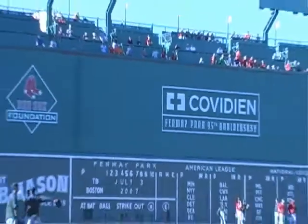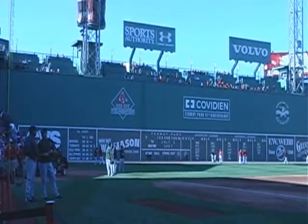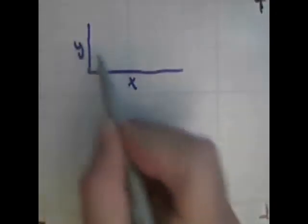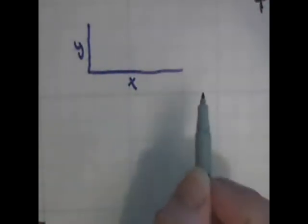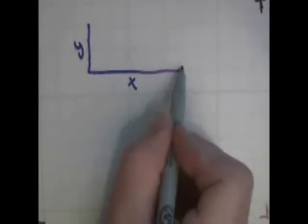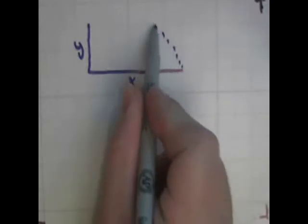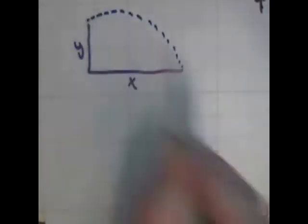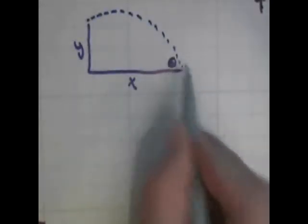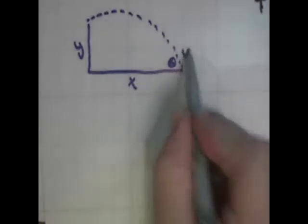This is a projectile problem involving a baseball player. The baseball player is standing a certain distance from a wall at a certain height. He manages to hit the ball over the wall, shooting at some angle and at some velocity.